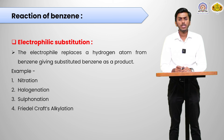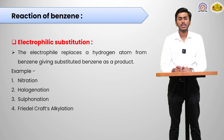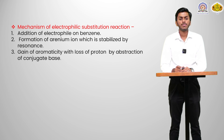In sulfonation, the hydrogen is replaced by a sulfonyl group, that is SO3H. In Friedel-Crafts acylation, the hydrogen is replaced by an alkyl group such as methyl, ethyl, etc.